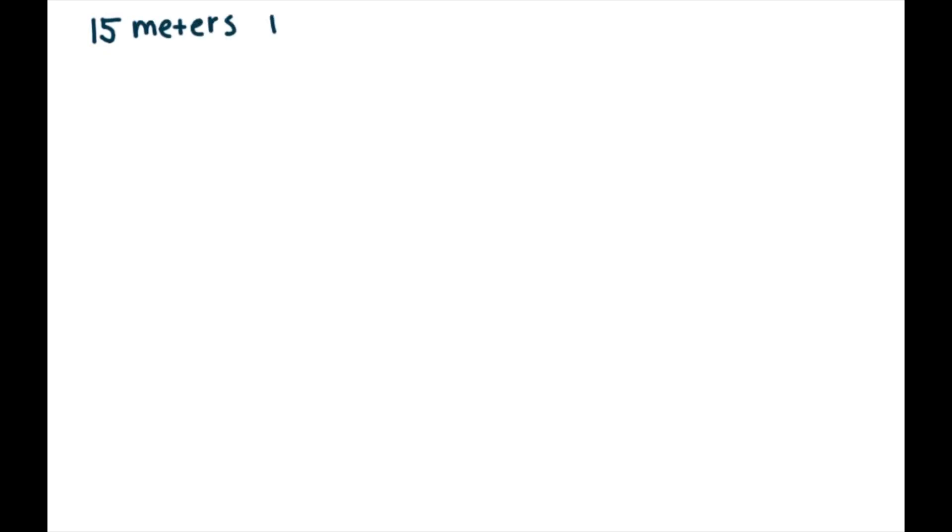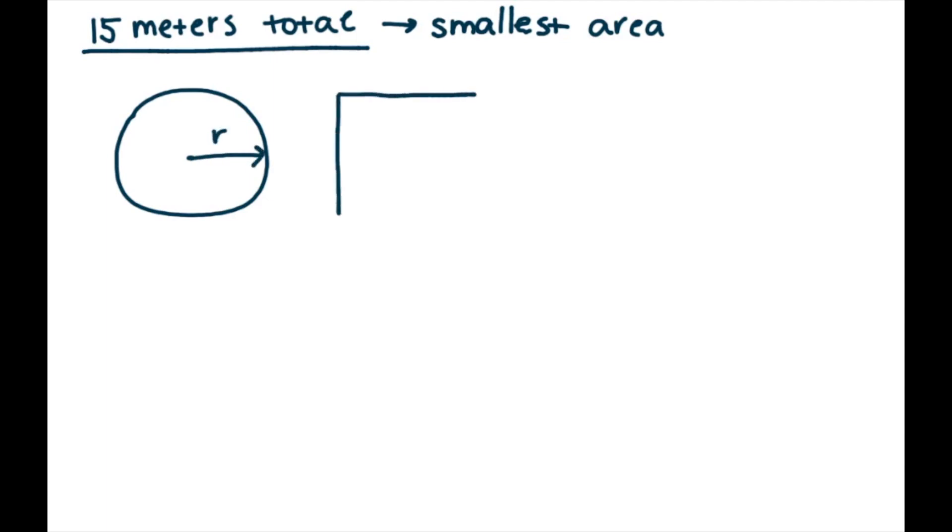So we have 15 meters of mesh in total and we know that we have to make the smallest enclosed area. Also, we know that we have to make one round shape and one square shape so the animals will not be together. And we know that the circumference is 2πr if we're talking about a circle and area is πr². Also, we know the circumference of square is 4x and area is x².